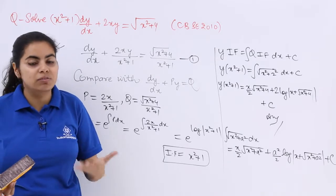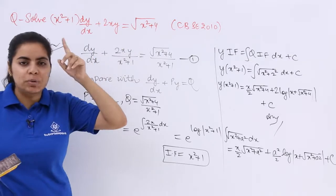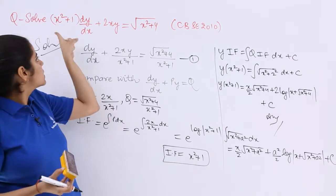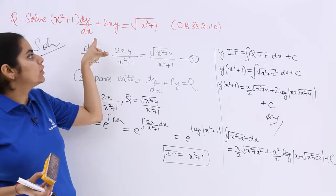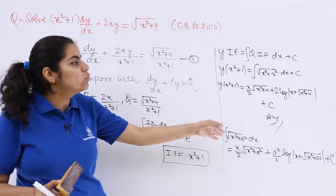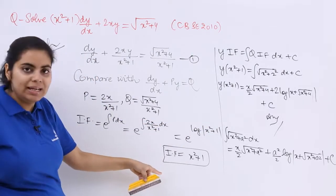When you see such kind of a question, it should be in your mind that I have to find out p and q. But before that comparison, let me make the coefficient of dy/dx as 1. Then you can compare and then you can use in your equations. Like I said, integrating factor is e^(∫p dx). Integrating factor has been found out.